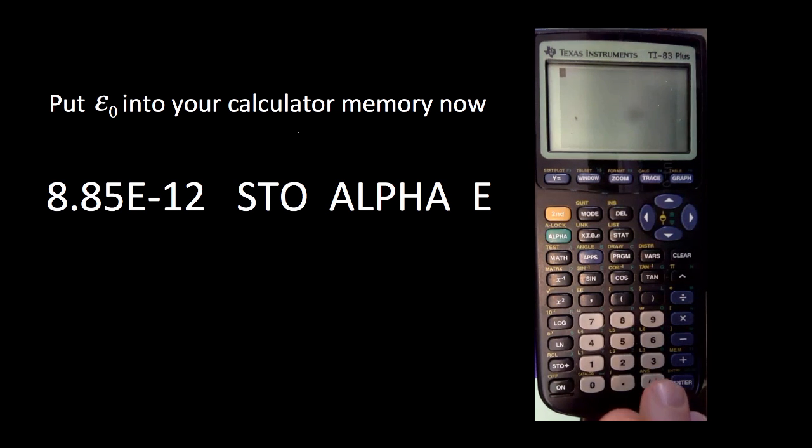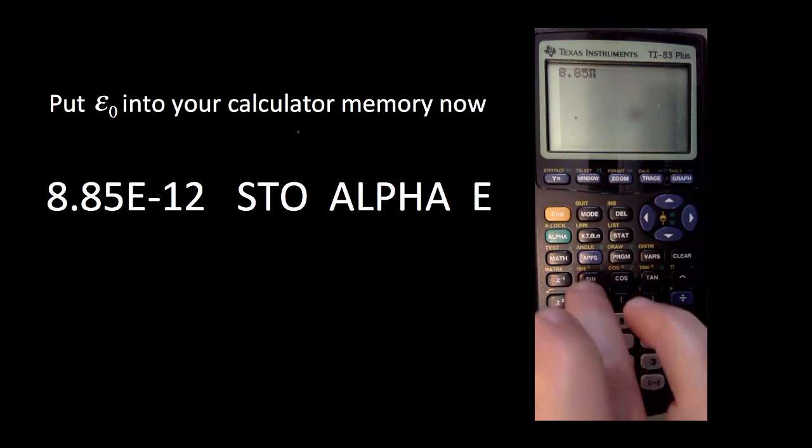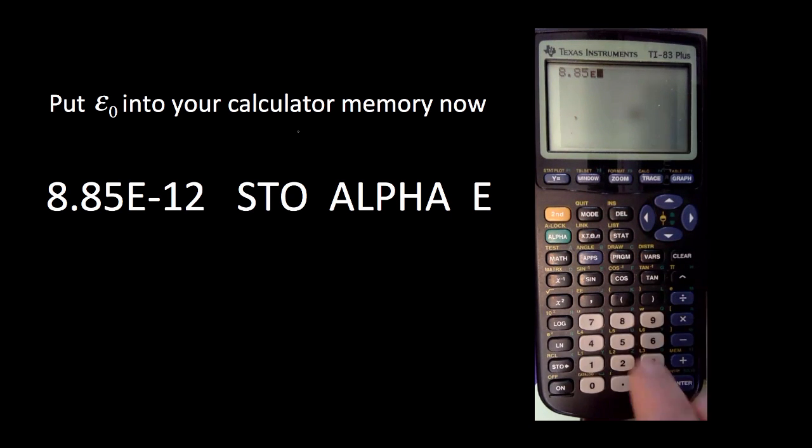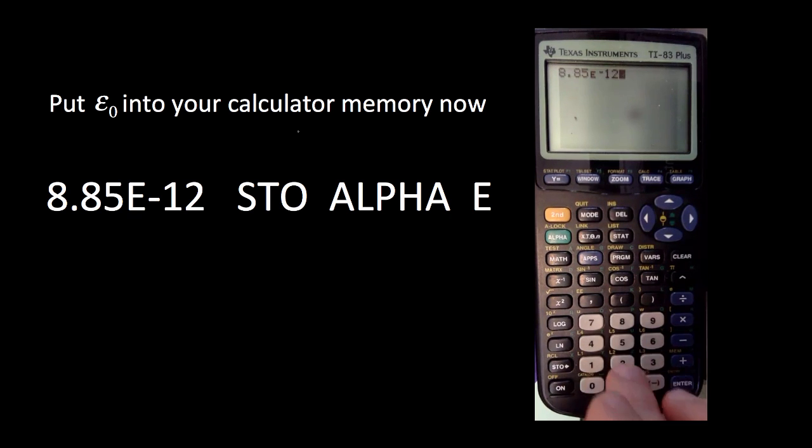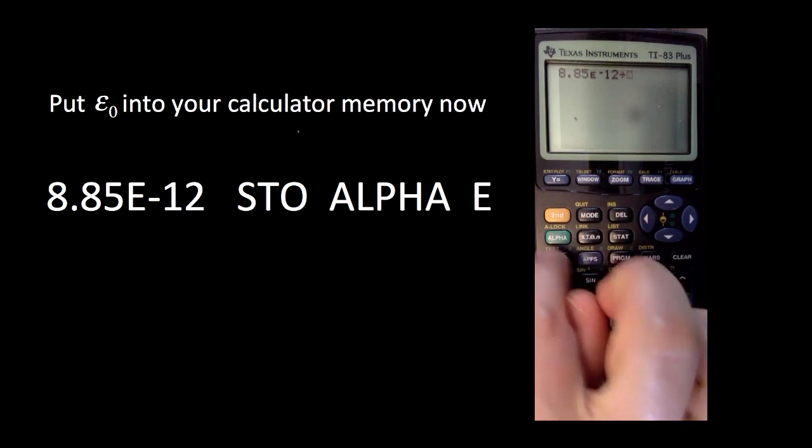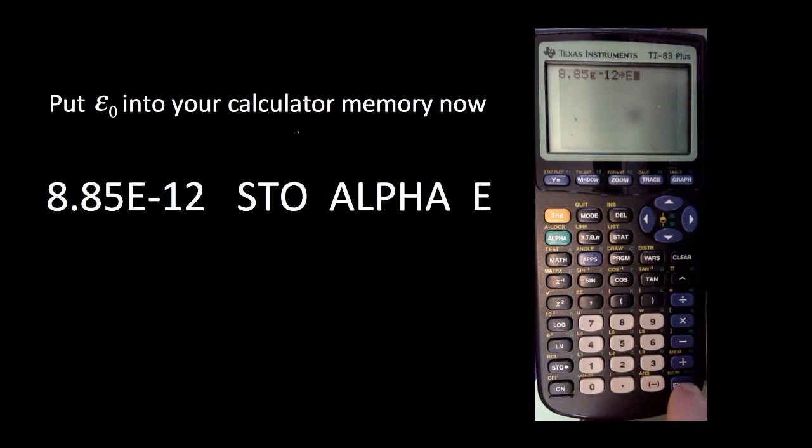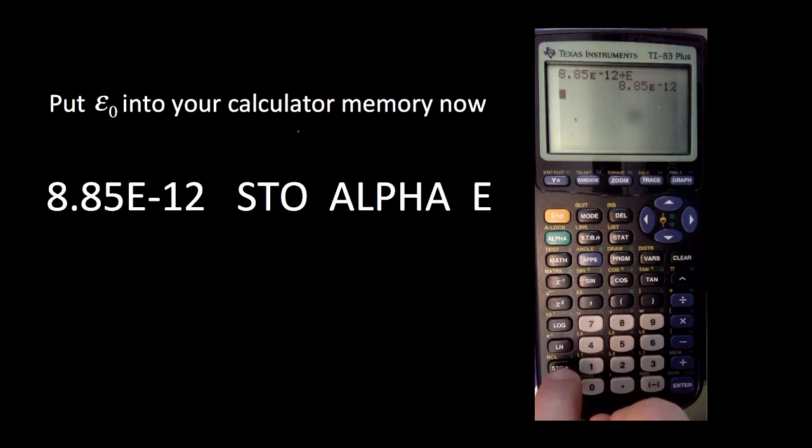Let's put epsilon-naught into our calculators right now. All you've got to do is type in 8.85 times 10 to the—which is the E key—negative 12. Then we're going to store it. Press the store button, then go alpha, the green button on many calculators. If you press the sign button, that's alpha E, and then press enter. Then you have epsilon-naught in there anytime you want. Just press second recall E again, and that'll get you epsilon-naught.